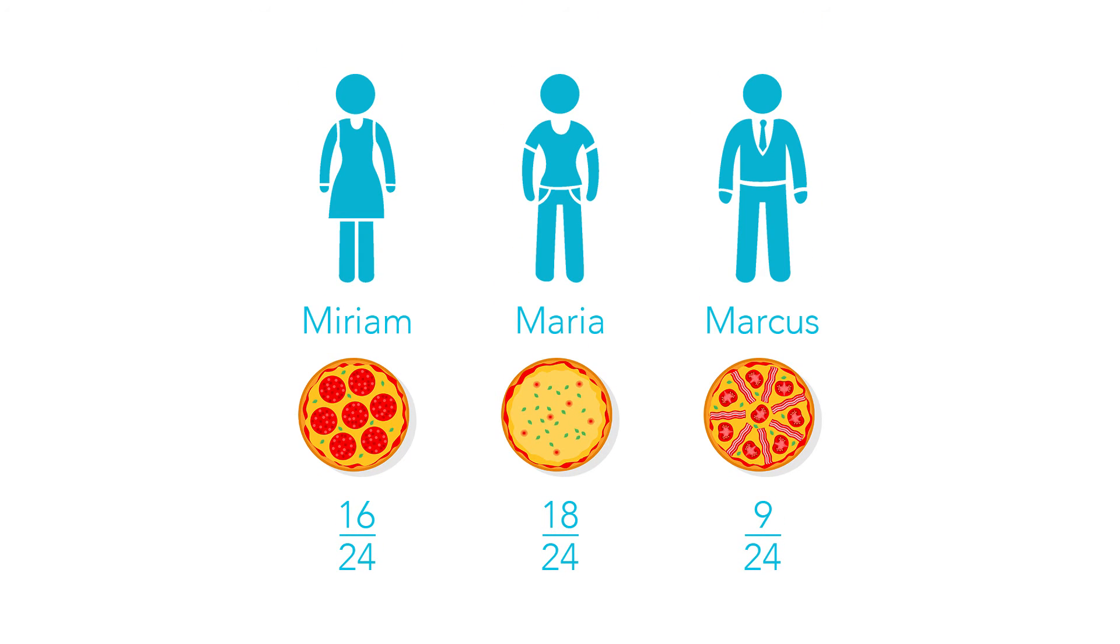Great, now I can easily see that Maria ate the most pizza because 18 is the biggest number and Marcus ate the least.